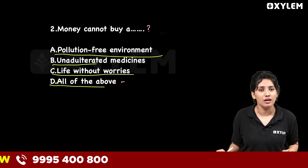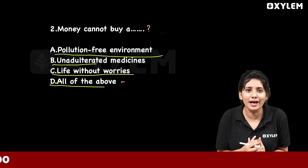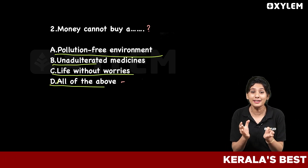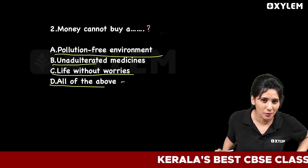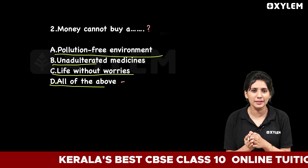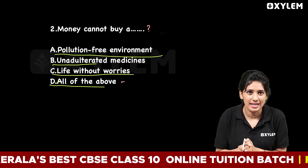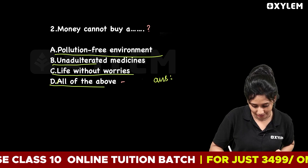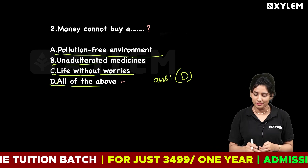Option C: Life without worries. If we have money, we may not be able to buy all these things. Option D: All of the above. Option D is the correct answer.